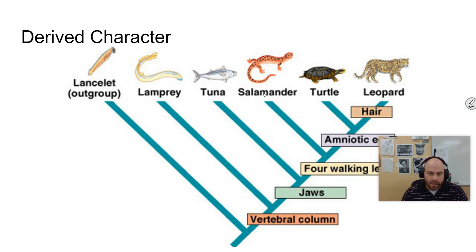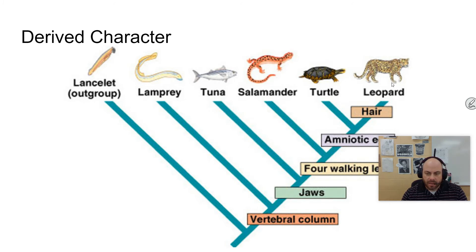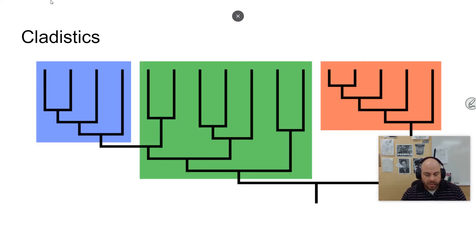A clade is an ancestral species and all of its descendants. You could pick anything to be a clade — for instance, the ancestral species that is the ancestor of all reptiles and mammals, or if you wanted to include all vertebrates, you'd have a much bigger clade. A clade is just a term for a particular group that you are studying, and that leads to the next term: cladistics, which is the study of breaking groups into clades.